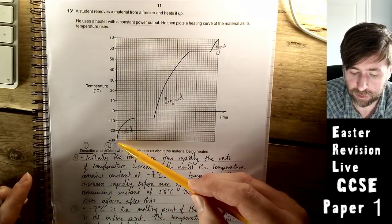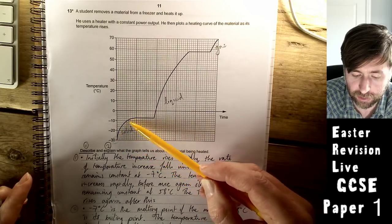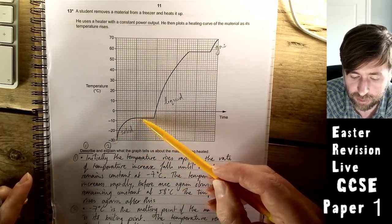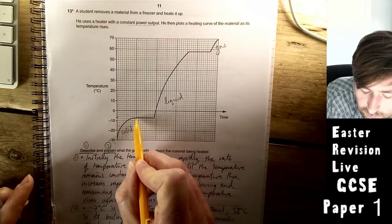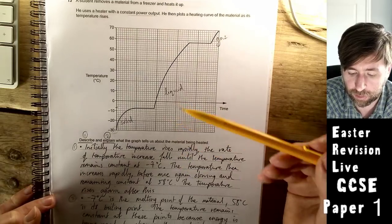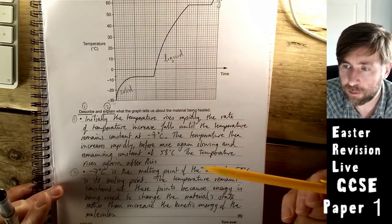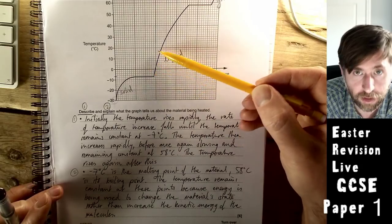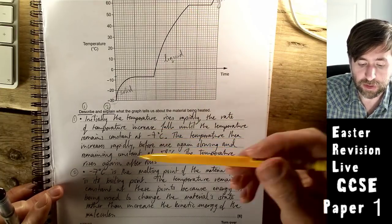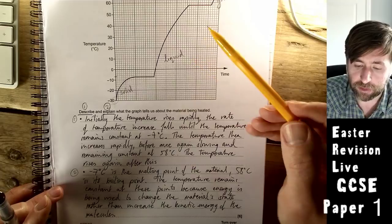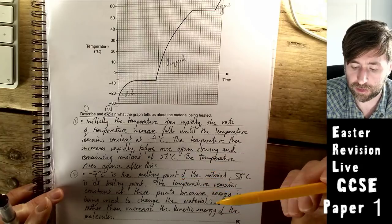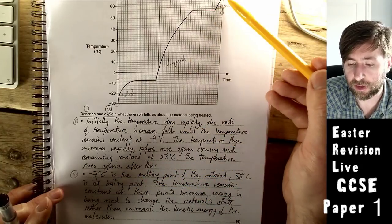My first paragraph is describe. Initially the temperature rises rapidly. You can see it's a curve. The rate of temperature increase falls until the temperature remains constant at minus 7. I've told them exactly what the temperature is. The temperature then increases rapidly again, so the gradient is high. Higher at first, and then a smaller gradient later on. Before once again slowing and remaining constant at 58 degrees Celsius. The temperature rises again after this. I haven't done any explaining yet, I've just said how it is like.